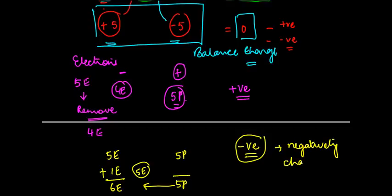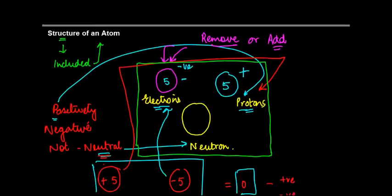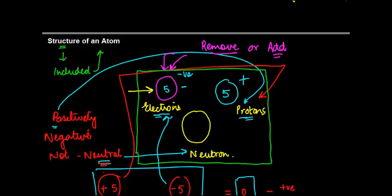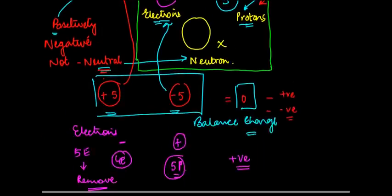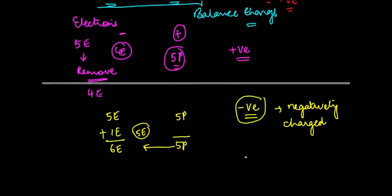Again, as I said, one of the things that you need to note here is that the addition or the subtraction for that matter can be only for an electron. It cannot be for a proton or a neutron. Ions, as we call them, is nothing but either a positively charged or a negatively charged atom.